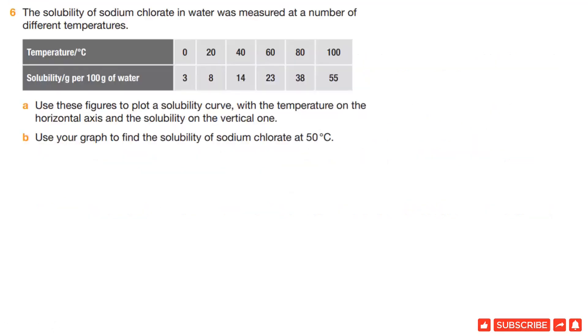Question 6. The solubility of sodium chloride in water was measured at a number of different temperatures. Temperatures are 0, 20, 40, 60, 80, and 100 degrees Celsius. The solubility per 100 grams of water is: at 0 it's 3, at 20 it's 8, at 40 it's 14, at 60 it's 23, at 80 it's 38, and at 100 degrees Celsius it becomes 55. Use these figures to plot a solubility curve with temperature on the horizontal axis and solubility on the vertical one.